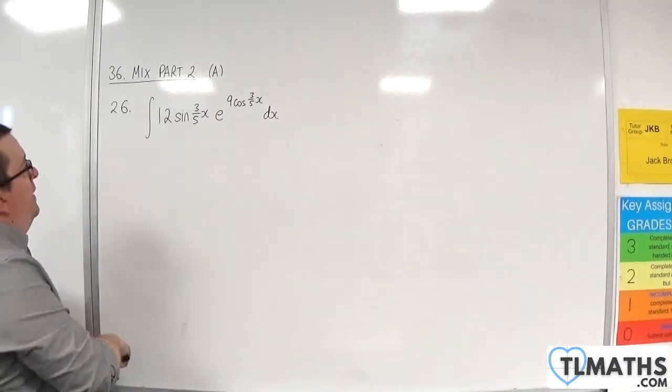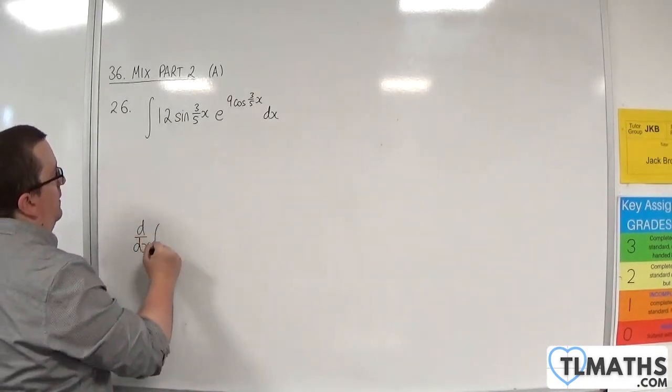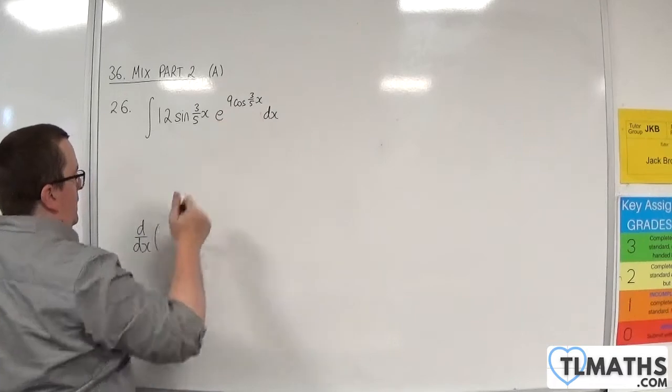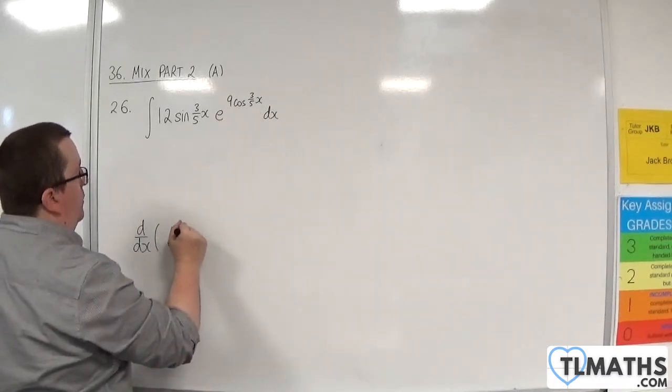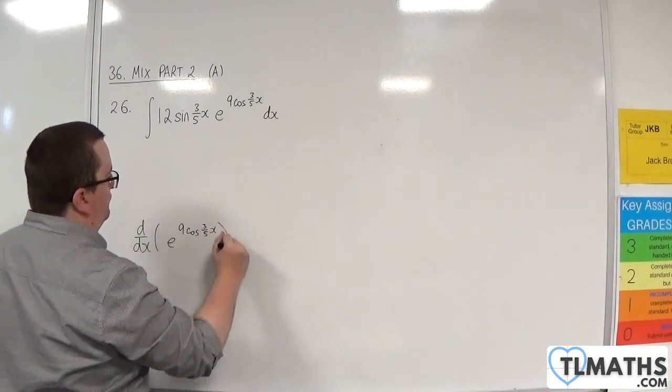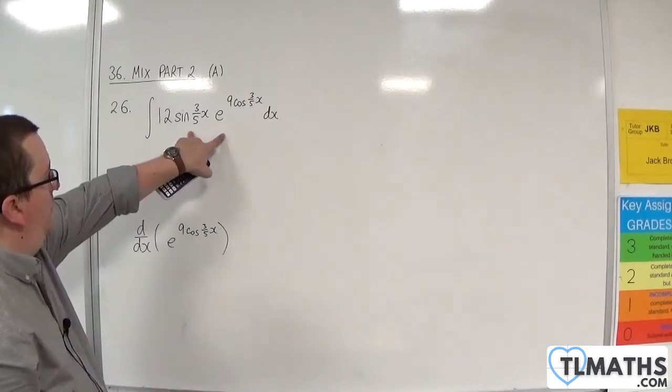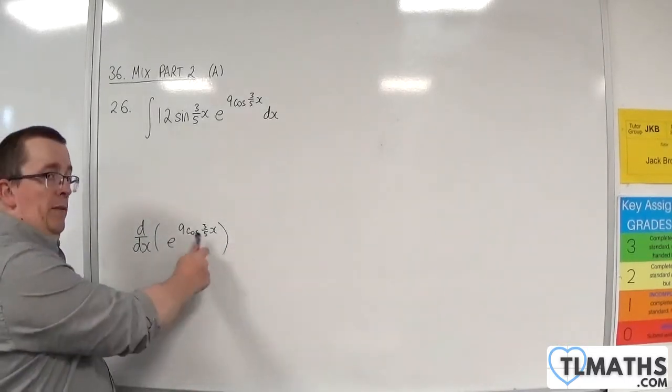So to reverse the chain rule on this, you need to think about differentiating this e to the 9 cosine of 3/5 x, because I know that this is going to integrate to some multiple of that.